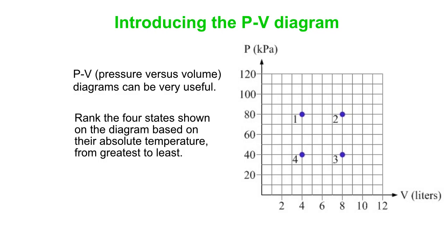And what we want to do is rank the four states based on their absolute temperature from greatest to least. So temperature is proportional to what? Well, the PV equals NRT equation, the ideal gas law, says that it's proportional to P times V. So we simply rank these states by their PV values, the product of their pressures and their volumes.